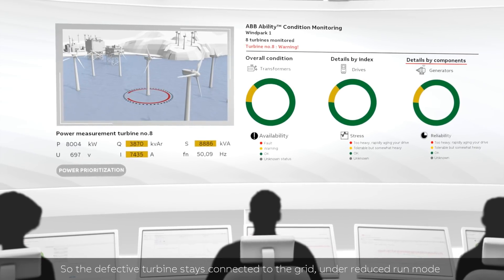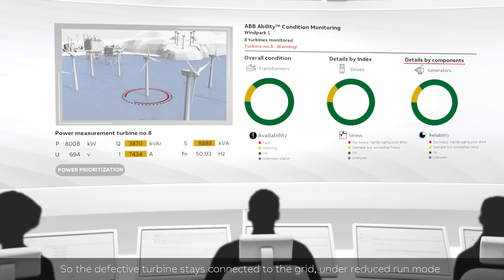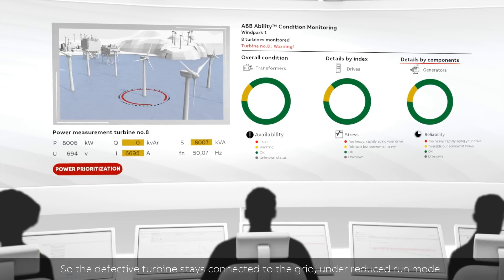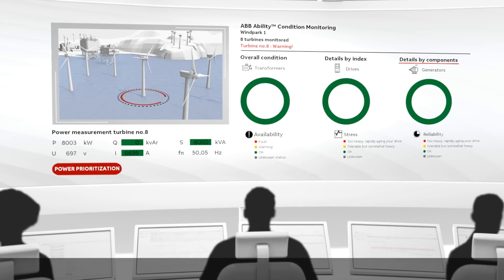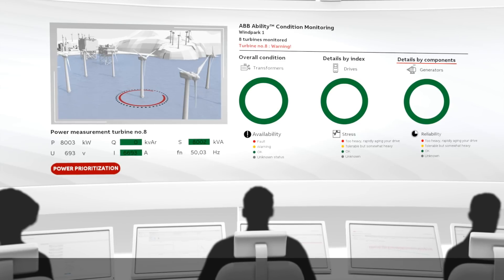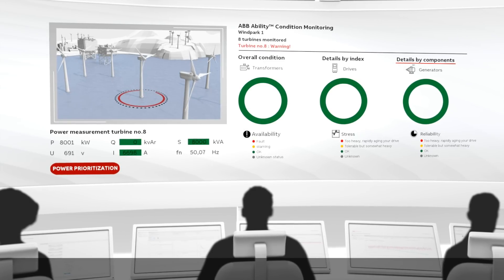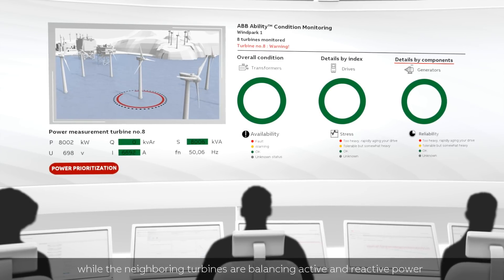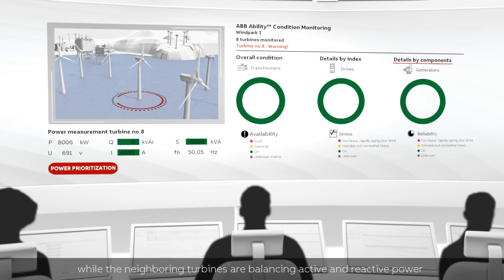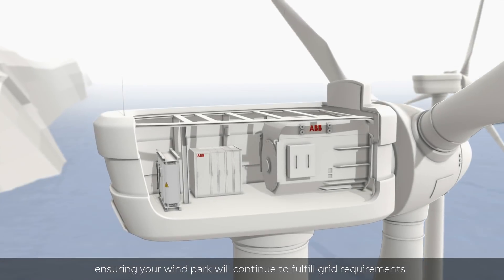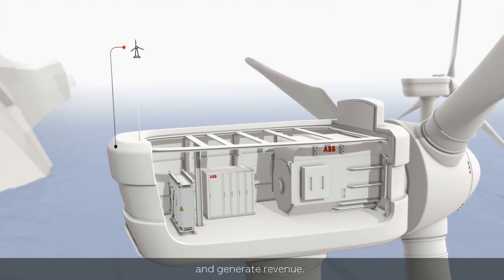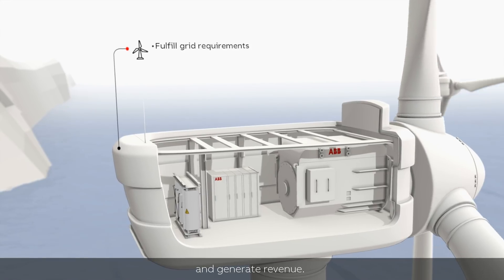So the defective turbine stays connected to the grid under reduced run mode, while the neighboring turbines are balancing active and reactive power, ensuring your windpark will continue to fulfill grid requirements and generate revenue.